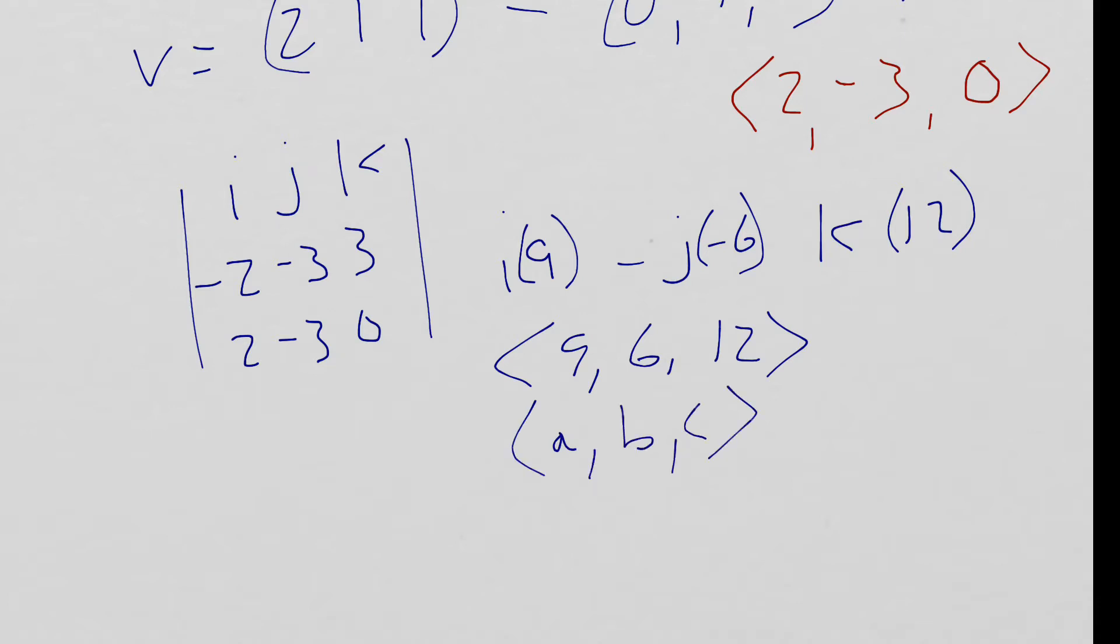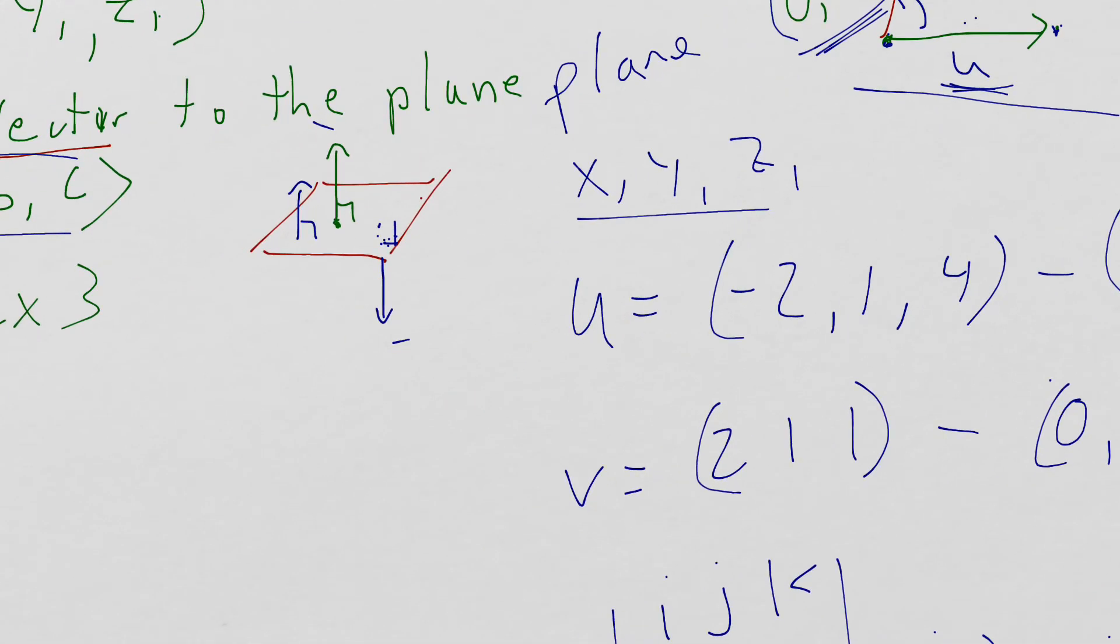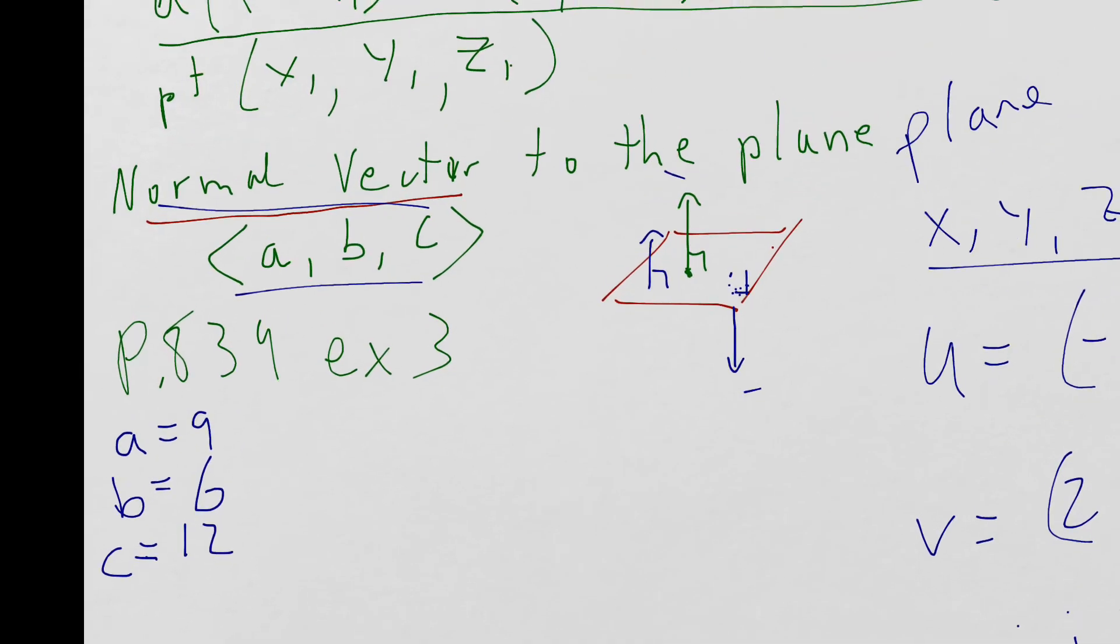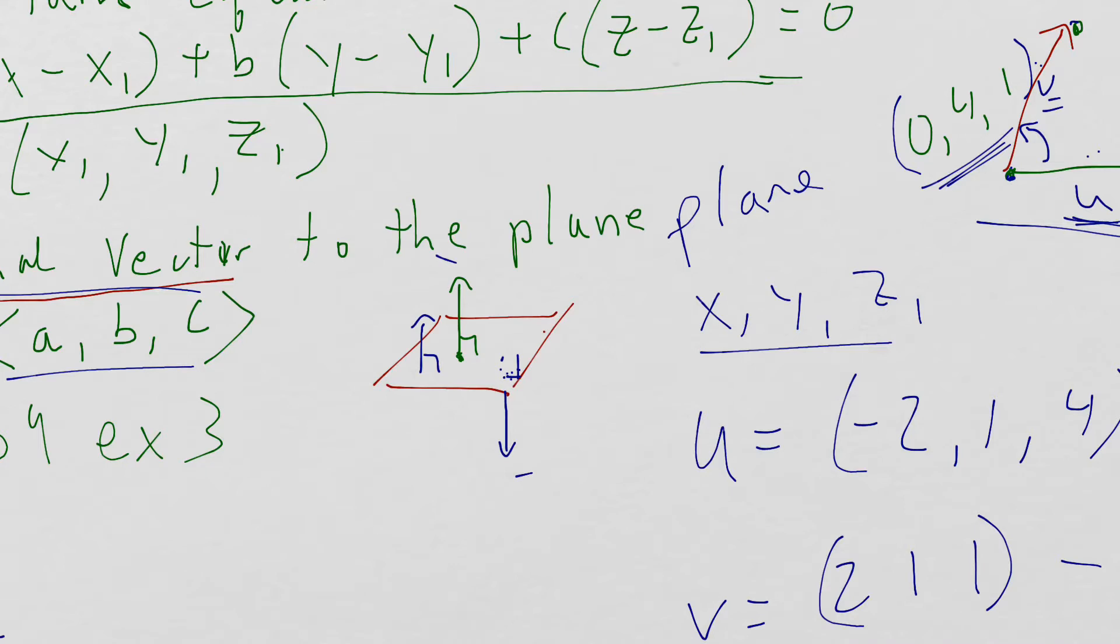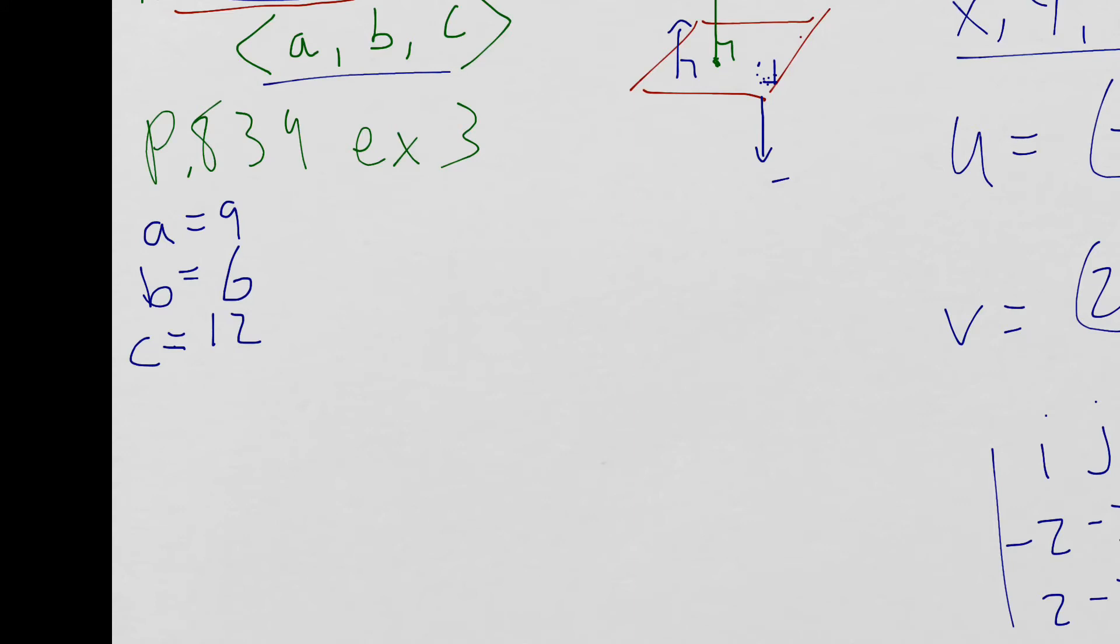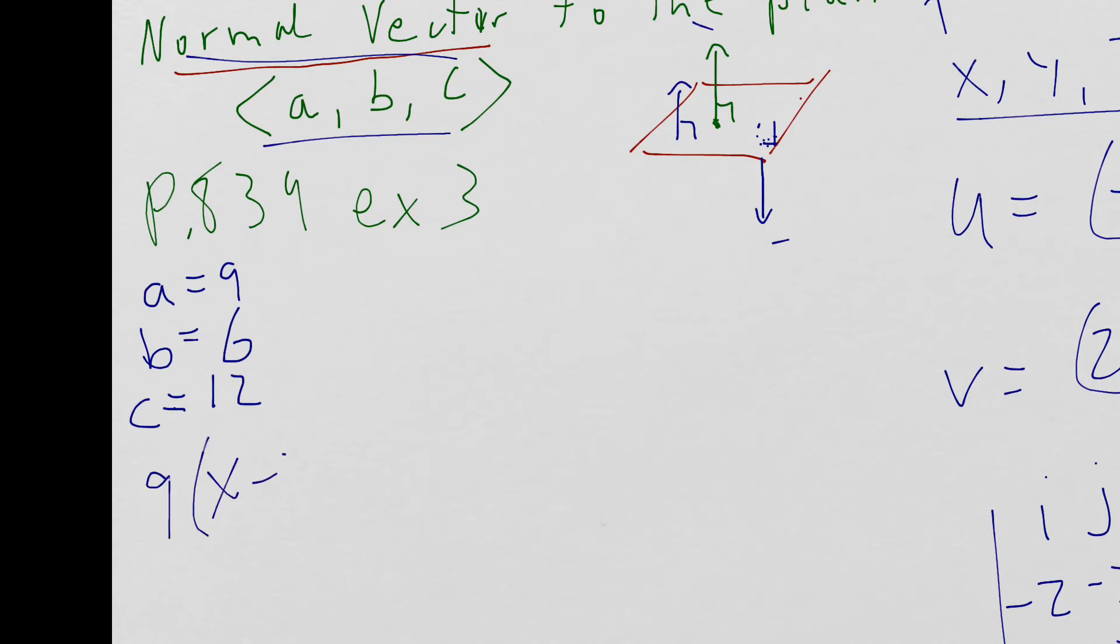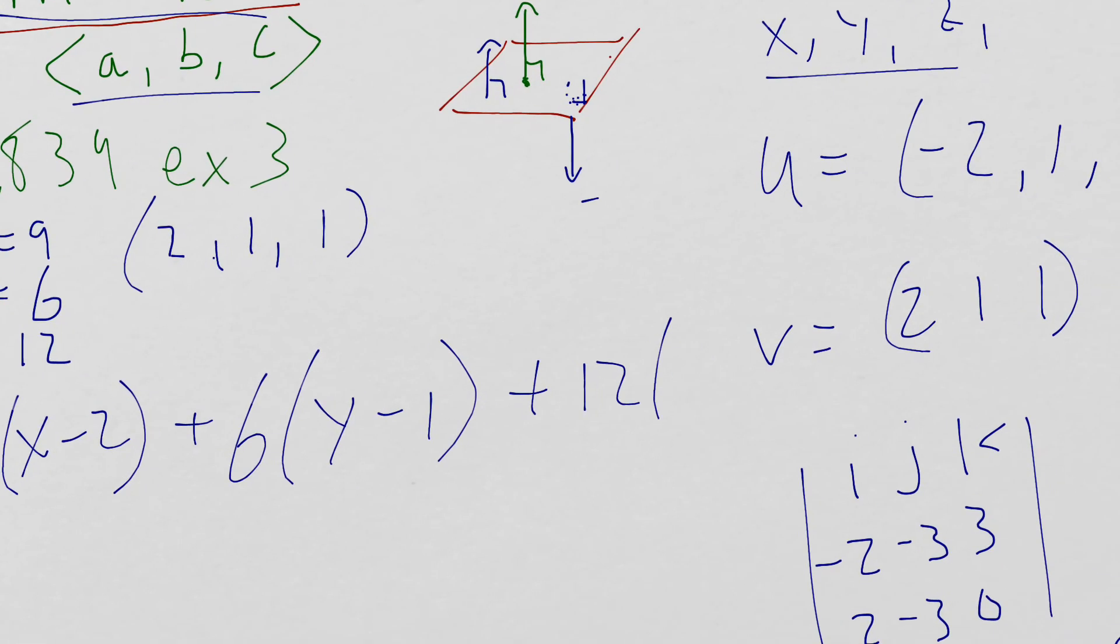And then all you simply have to do to get your standard form of the plane is pick one of these three points up here. So for us, we'll pick a different point than the book. It doesn't matter. I guess it doesn't matter. We can just pick the same point in the book. The book picks, looks like, 2, 1, 1. So X, or excuse me, A is first. So it's 9 times X minus 2. My point is 2, 1, 1.